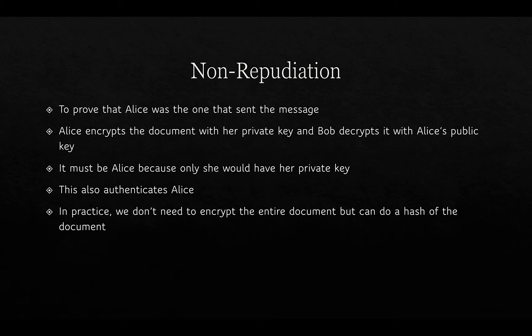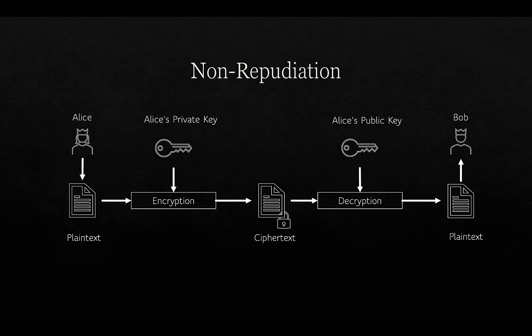In practice, we don't need to encrypt the entire document — we can encrypt just a hash of the document, which is a much smaller amount. Alice takes the plaintext, encrypts a hash of it using her private key, and sends that ciphertext to Bob. Bob then takes Alice's public key, decrypts it, and has confirmation that it was Alice who sent it. Of course, he has to know that Alice's public key actually belongs to Alice.